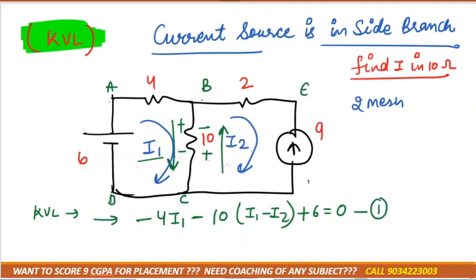Now if we take the second mesh, second equation that is BEFC. Now as I told you we can't go through the path where our enemy is present. Current source is just like your enemy.